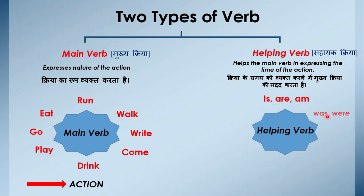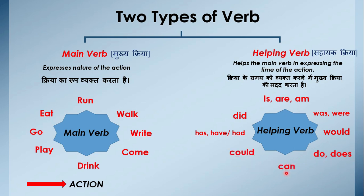Helping verbs jaise is, are, am, was, were, did, has, have, had, would, do, does, could, can — yhe helping verbs hai. Yhe hume samye ke baare mei bataati hai ki jho karriya hai woh kis samye mei ho raha hai. Is, are, am — yhe present ke liye use ke jate hai. Was, were — past ke liye use ke jate hai. Would aur could — yhe modal hai jho future ya past ke liye use ke jate hai. Can — present ke liye use ke jate hai.